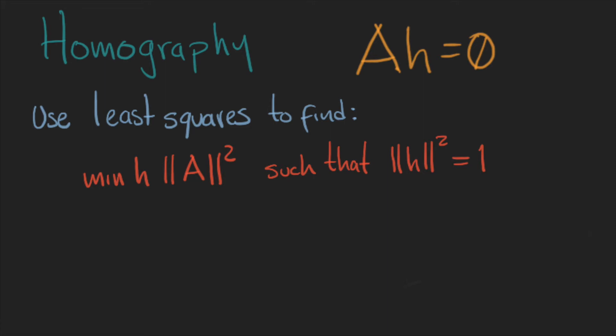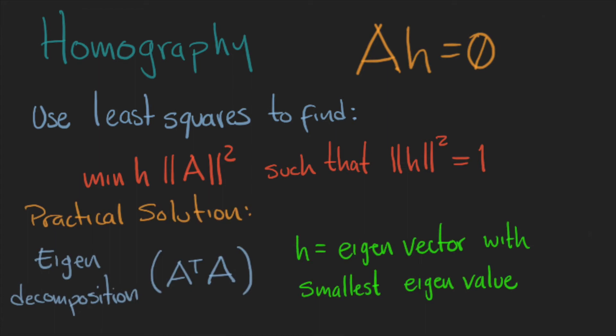And an easy way to find h is to calculate the eigenvectors of A transpose A. Here, the eigenvector with the smallest eigenvalue is the vector that corresponds to the h that we are looking for.